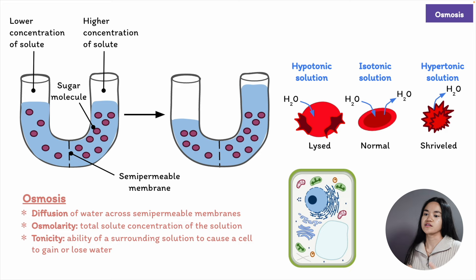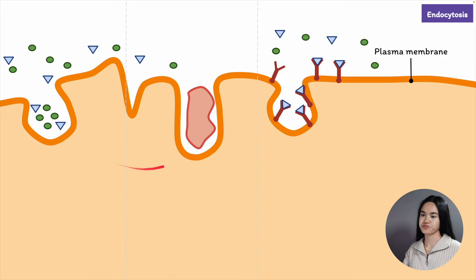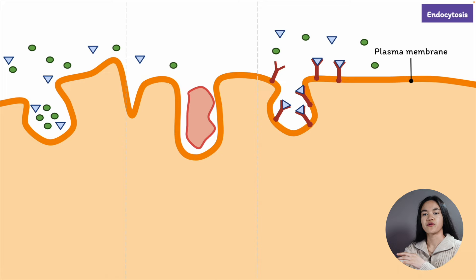Let's move on to bulk transport: endocytosis and exocytosis. This is another pathway by which large molecules such as proteins and polysaccharides, as well as cellular waste, can enter or leave cells. In endocytosis, the cell takes in materials in bulk by forming new vesicles from the plasma membrane — a small region of the plasma membrane sinks inwards to form a pocket, the materials are enclosed, and the membrane pinches off to form a vesicle. The reverse process is exocytosis, where membrane-bound vesicles in the cytoplasm fuse with the plasma membrane and release their contents to the outside.